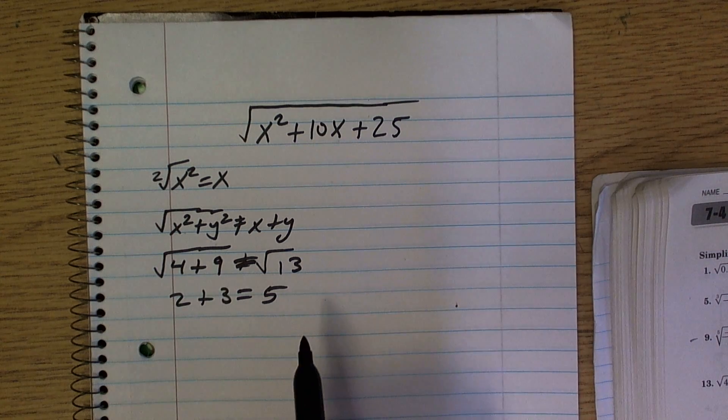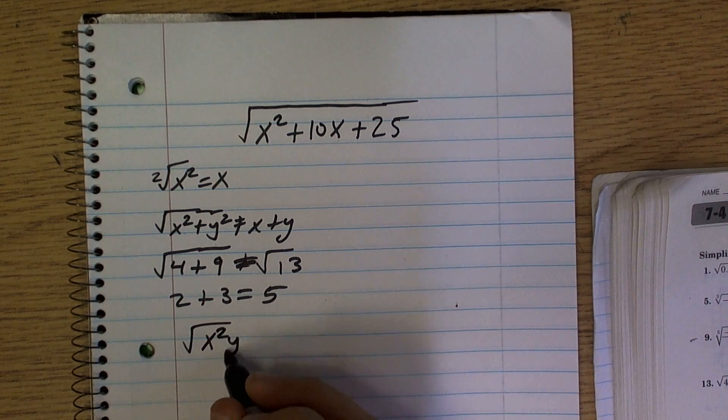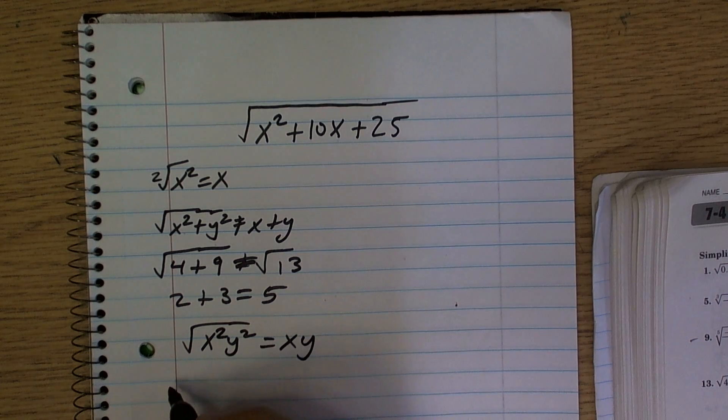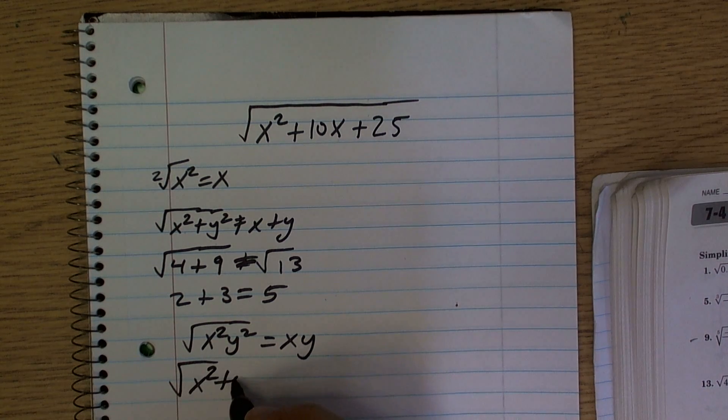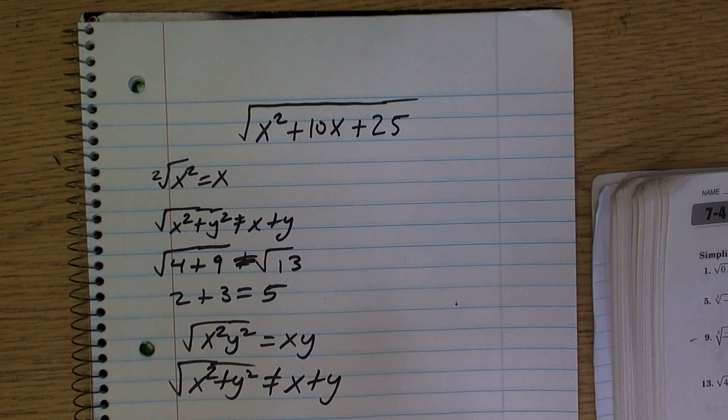This works for multiplication. If I said the square root of x squared times y squared, that equals x times y. However, the square root of x squared plus y squared does not equal x plus y.